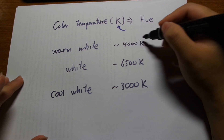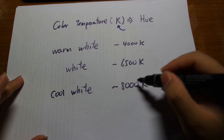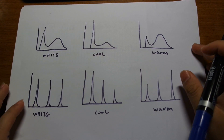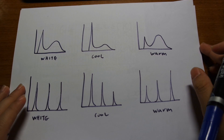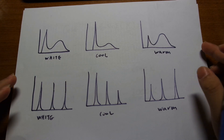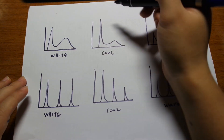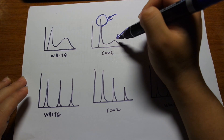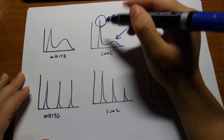Kelvin units are typically around 4000 for a warm white bulb, around 6500 to 7000 Kelvins for a regular white bulb, and about 8000 to 9000 for a cool white bulb. What does the Kelvin rating tell us about the spectrum? It actually doesn't tell you much, because it depends on how the light bulb produces light. A cool white LED will have a higher blue peak and a lower yellow peak, shifting the light towards the blue side, which is why it has a cooler looking color.